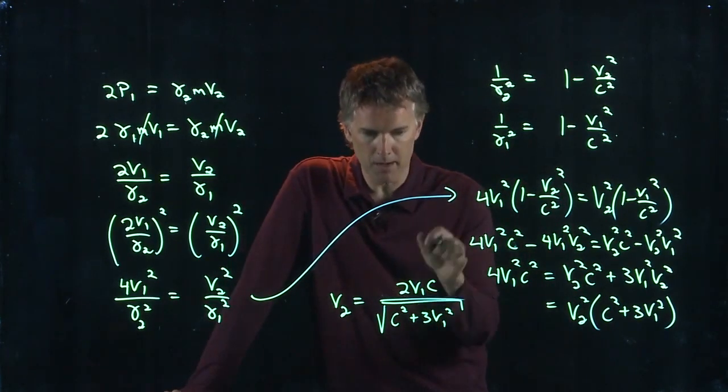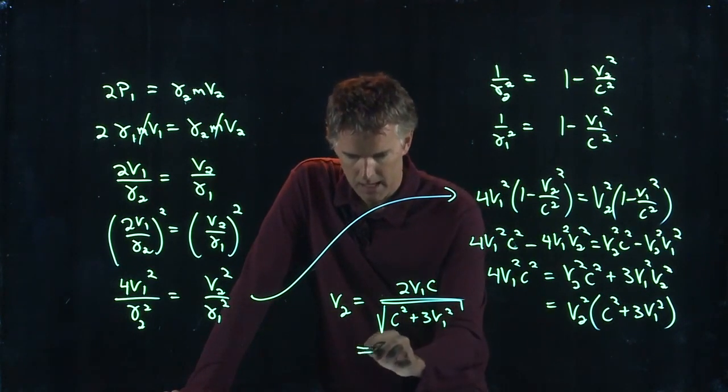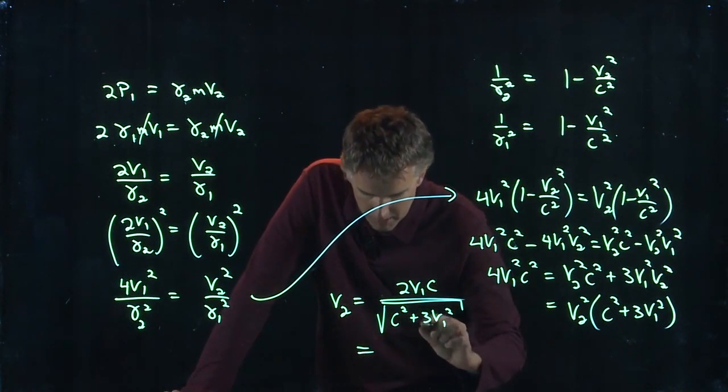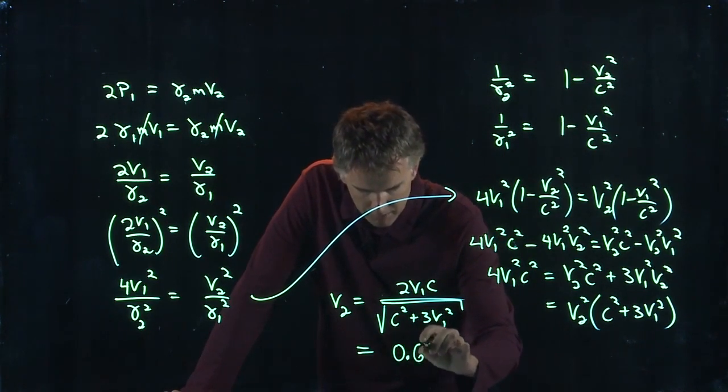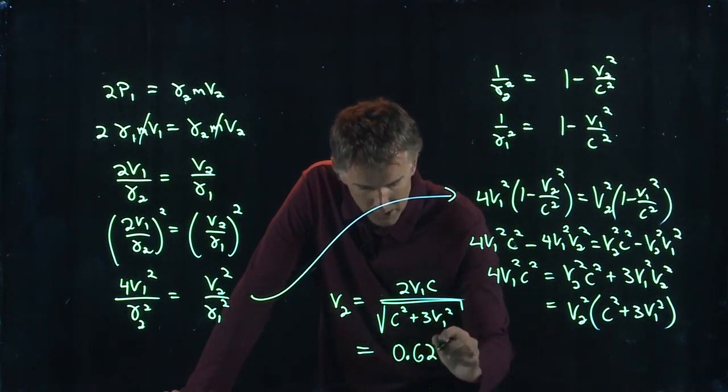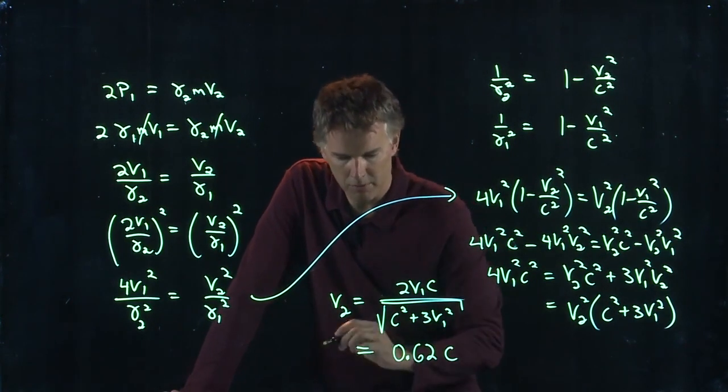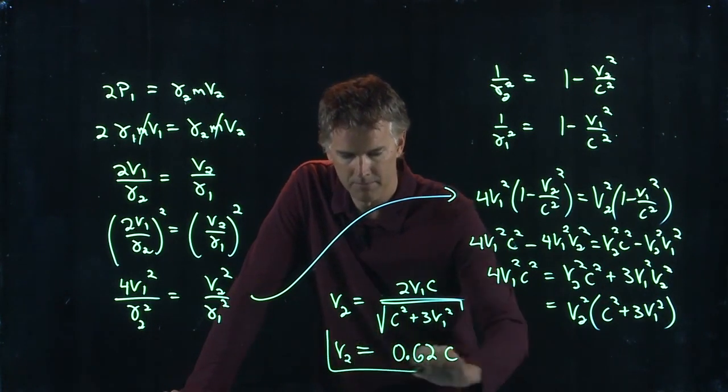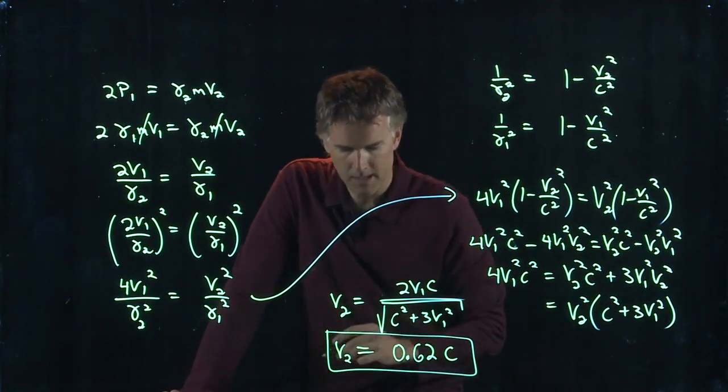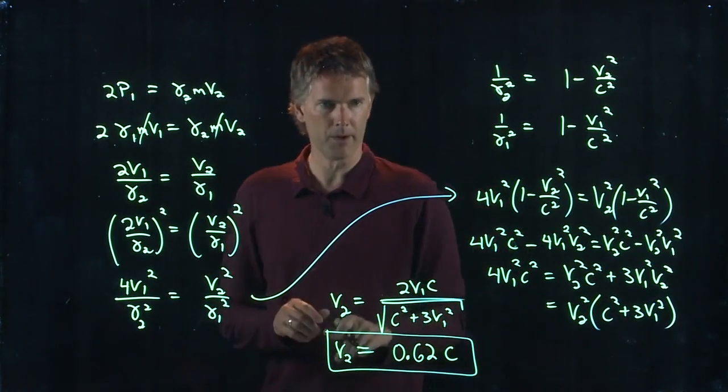And now you have all these numbers, right? We have v1, we have c obviously, and if you plug in all those numbers you can double check with mine. You should get 0.62 and it wants it in the units of speed of light. And so you write 0.62 and then the units are c. So those were for my numbers, you of course will have different numbers for your v1.